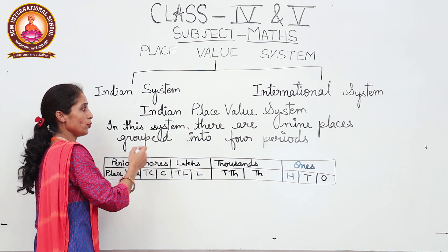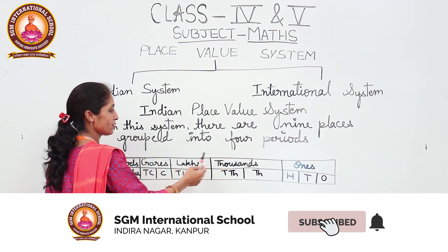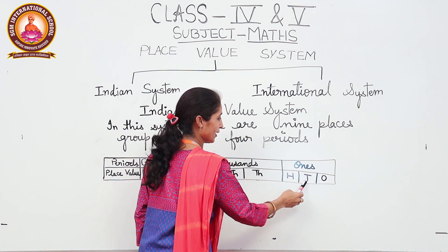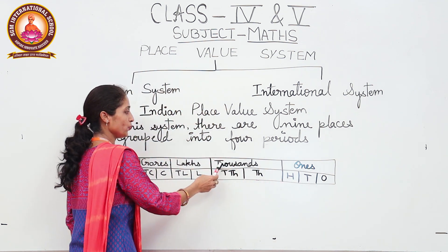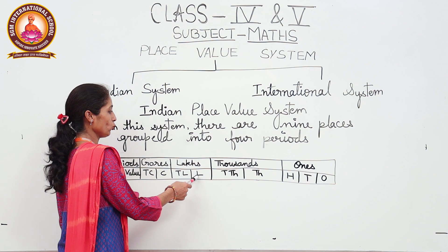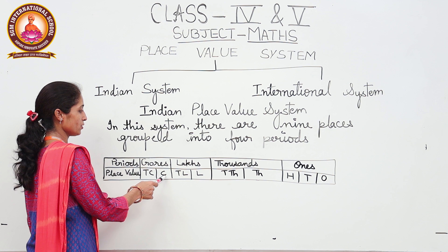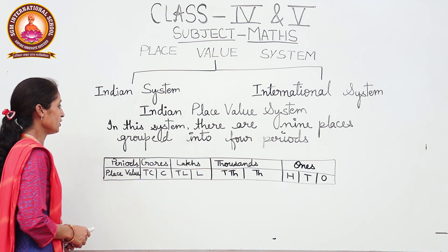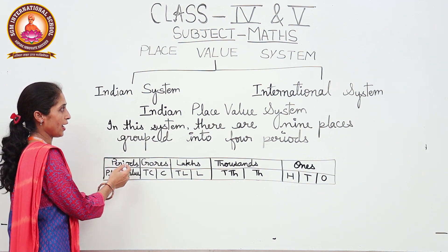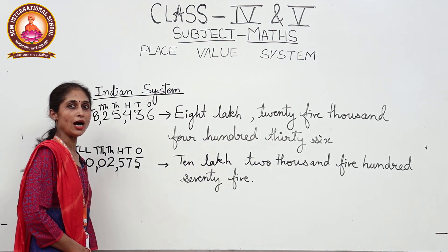The Indian place value system is divided into nine places and grouped into four periods: crores, lakhs, thousands, and ones. The ones period is divided into three places: ones, tens, and hundreds. The thousands period is divided into two places: thousands and ten thousands. The lakhs period is divided into two places: lakhs and ten lakhs. The crores period is divided into two places: crores and ten crores.